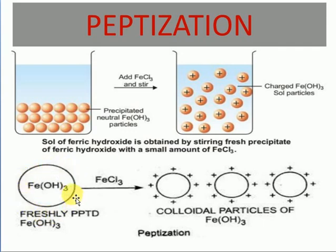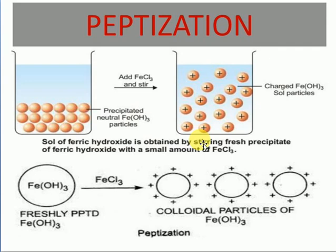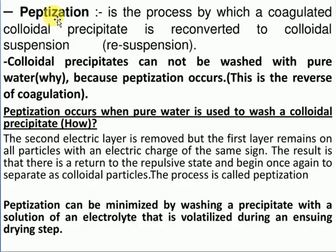For example, ferric hydroxide is a solid. When a small amount of ferric chloride is added, Fe³⁺ ions are absorbed on the surface of the ferric hydroxide colloidal particles. Because of the Fe³⁺ ions, a positive charge is generated around the colloidal particles, causing repulsion. The particles do not settle down, so the solution behaves like a colloidal solution. During peptidization, the suspension is converted into colloidal solution by adding electrolyte, and the colloidal particles get charged.